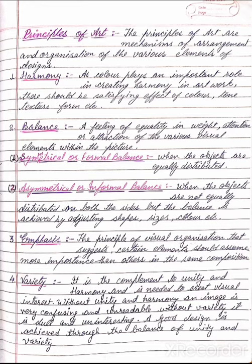The first principle of art is harmony. Color plays an important role in creating harmony in artwork. There should be a satisfying effect of color, tone, texture, form, etc. The second is balance — a feeling of equality in weight, attention, or attraction of the various visual elements within the picture.